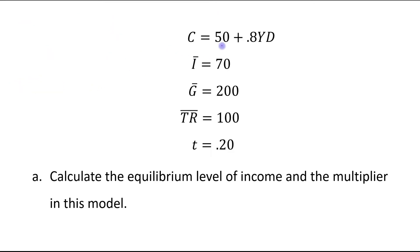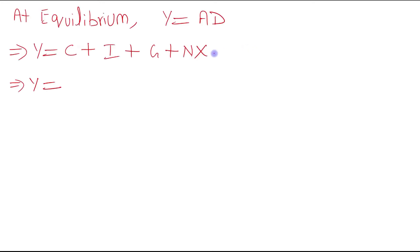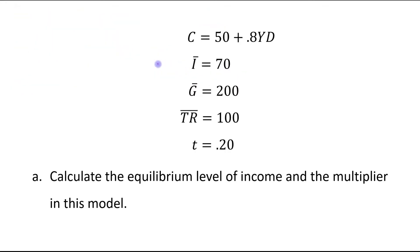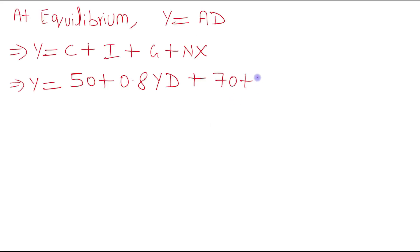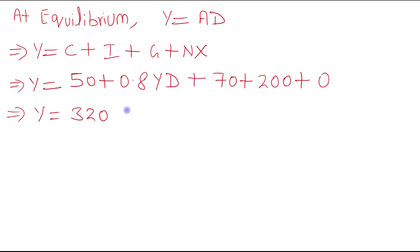The consumption function is given as 50 plus 0.8Yd, so we write 50 plus 0.8Yd. Investment is given as 70, government expenditure is 200, and net exports are not given so we assume them to be zero.